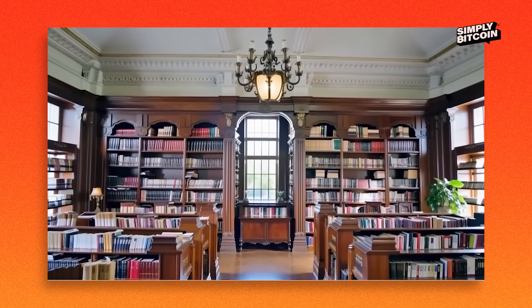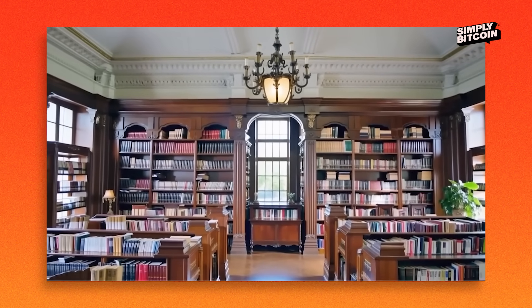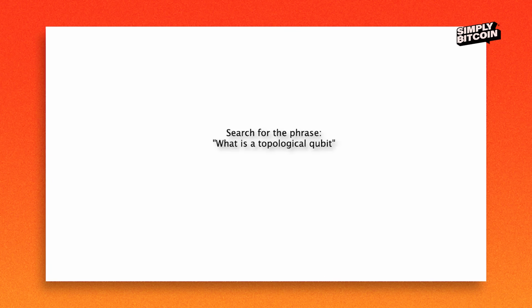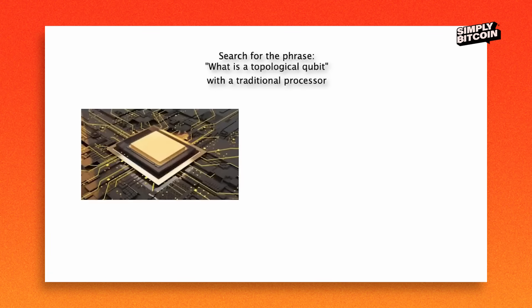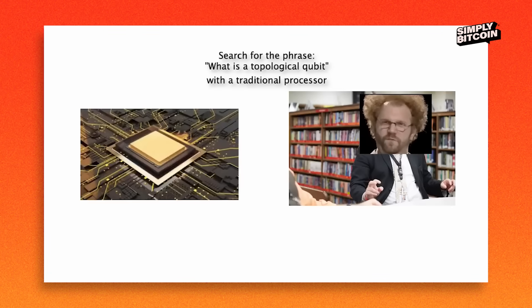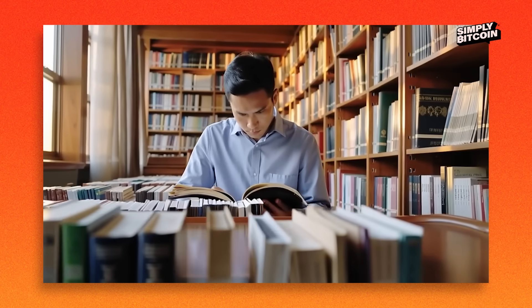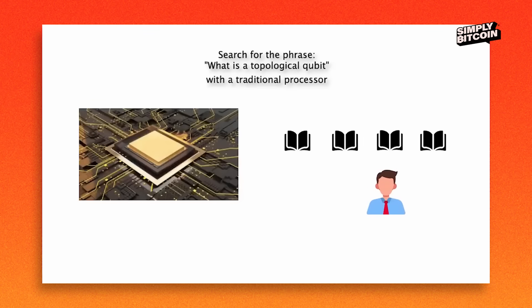But here comes the villain: quantum computers, bringing some serious heat. We understand classical computing — picture a library of a thousand books, and you're hunting for one specific phrase. A classical processor is like a methodical librarian: they grab one book, flip through every single page, find no match, then move on to the second book. One by one, checking a thousand books. Maybe the phrase is in book 10, maybe book 999. It's a serial, step-by-step process — one or zero, on or off. No shortcuts. That's just how your laptop works.